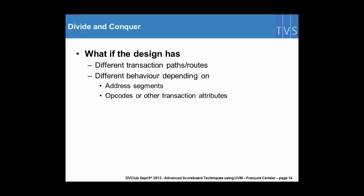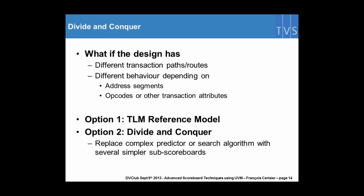What if the design has several paths or several routes or if the design has different behaviors depending on address maps or some other attributes of the transaction? Either you have a reference model, in which case you just connect your simpler scoreboard to the reference model. An alternative is divide and conquer. If you have different behaviors, implement different scoreboards and make the split of these behaviors to call the appropriate scoreboards or predictors.